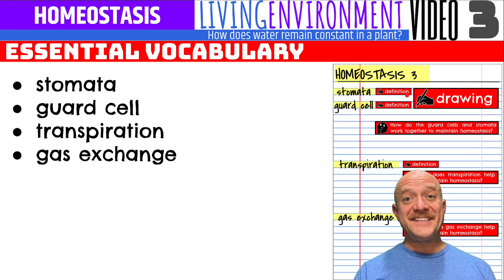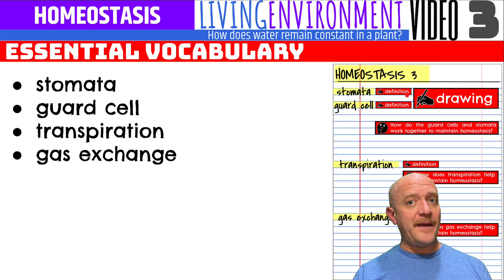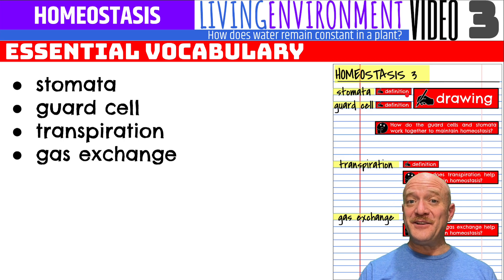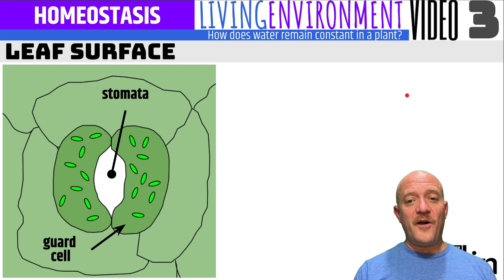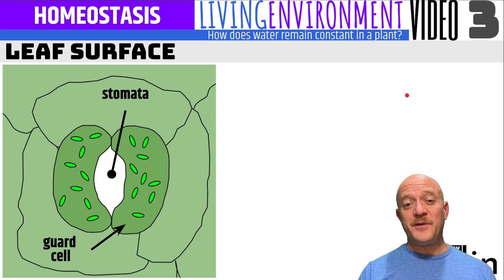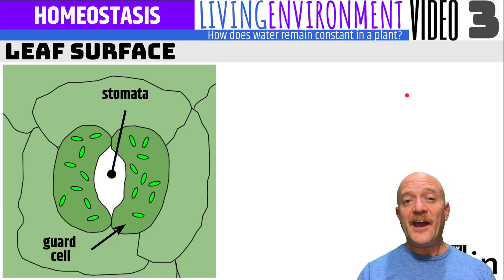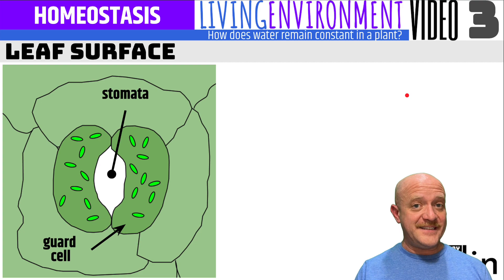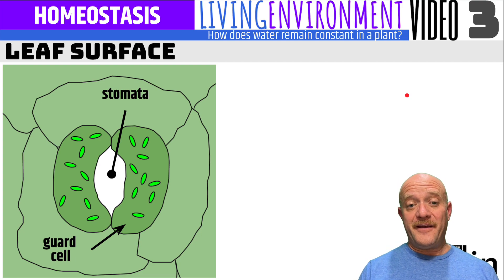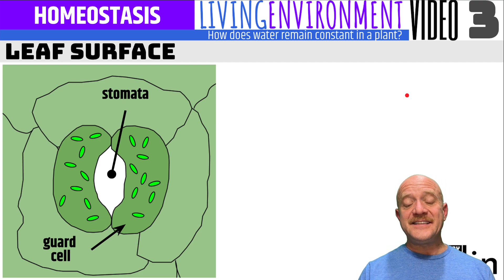Hey, this is the video for homeostasis 3. Go ahead and check out the essential vocabulary and set up your guided notes. When we're talking about homeostasis, we have to talk about homeostasis in a plant. We have two structures on the surface of a leaf that help with homeostasis: the stomata and the guard cell. This is a diagram of each.